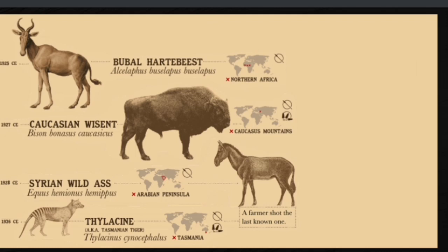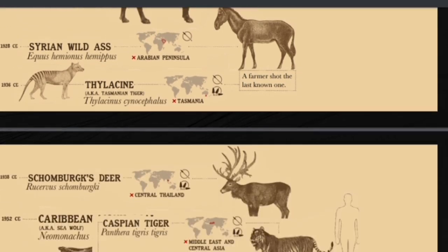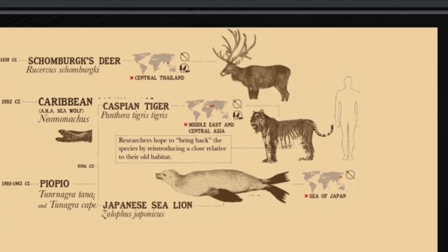In 1925, the bubal hartebeest went extinct due to hunting. In 1927, the Caucasian wisent went extinct. In 1928, the Arabian wild ass went extinct from the Arabian Peninsula. One of the most famous extinctions was the Tasmanian tiger, also called the thylacine, which went extinct in 1936 — it seems that a farmer shot the last one. In 1938, Schomburgk's deer went extinct in central Thailand due to hunting and destruction of its habitat.